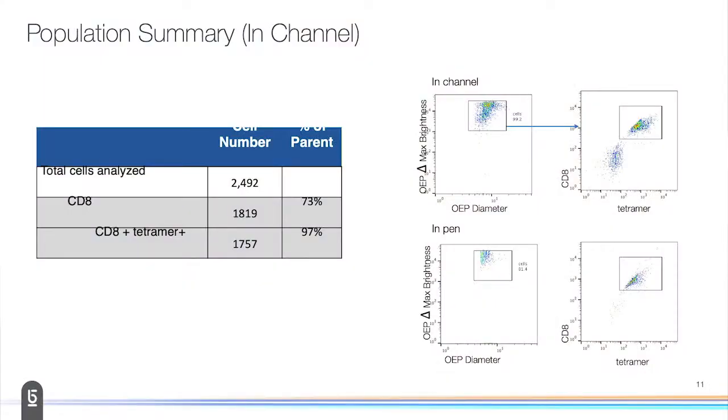You can set it off and say, 'Okay, go pen as many of those cells that fall into those gates into the nano pens.' What we get is basically a summary of all the cells that are in those channels. Here we were looking at CD8 positive, tetramer positive cells. In one of these runs, in one load, we got 2,500 cells screened, of which 1,757 were double positive. We can plot that in FlowJo.